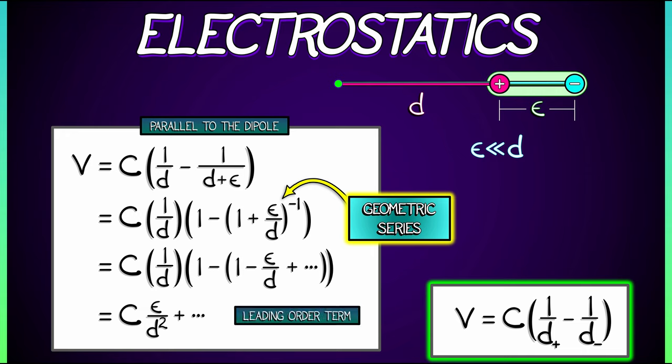Very interesting. The leading order term is totally different. Instead of epsilon squared over 2D cubed, we now have epsilon over D squared. Using these different series, depending on the orientation, is giving you access to the leading order terms in this electrostatic potential.